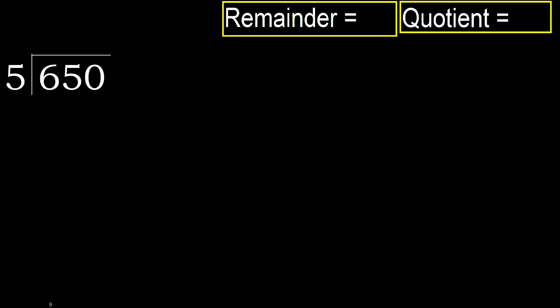650 divided by 5. 6 is not less, therefore we work with 6. 5 multiplied by which number is nearest to 6 but not greater.